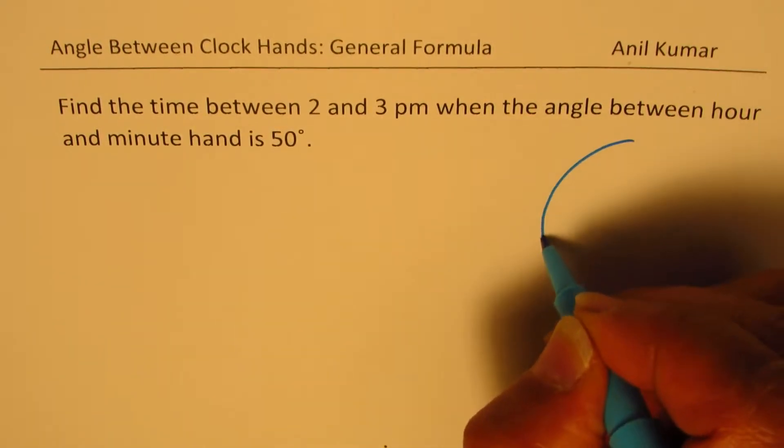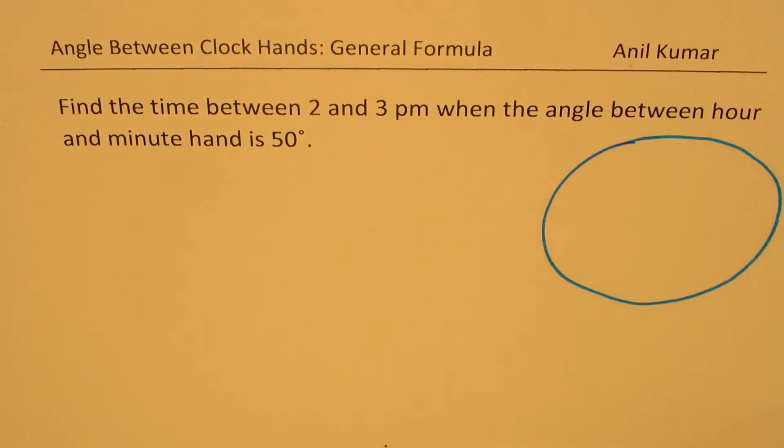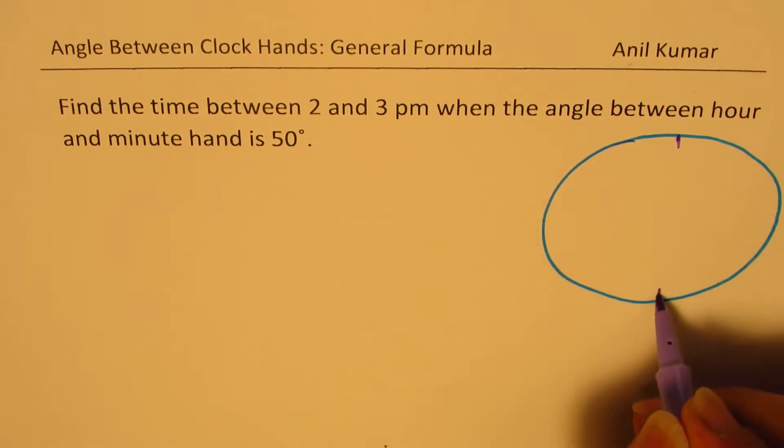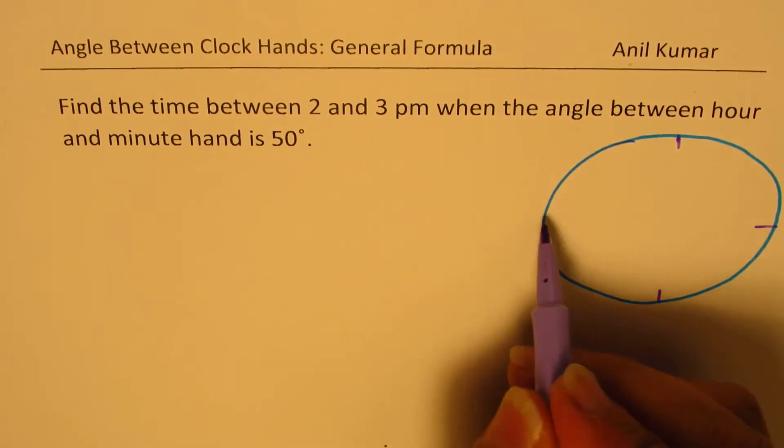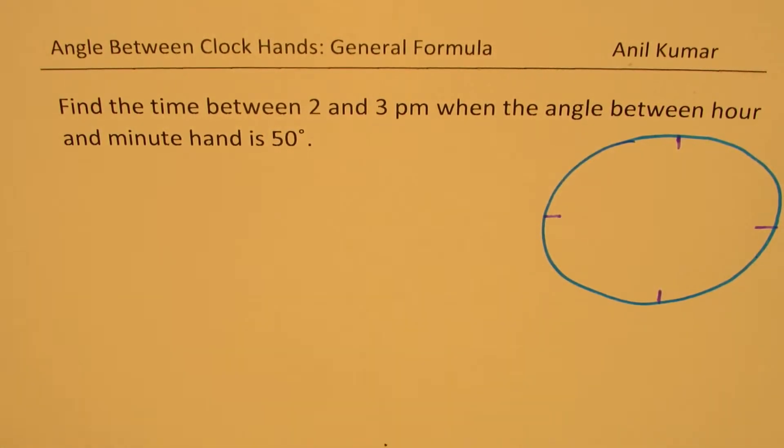So let's first try to understand the situation. Let's say we have a clock here and we want the time between 2 to 3 p.m. when the angle between the two hands is 50 degrees.